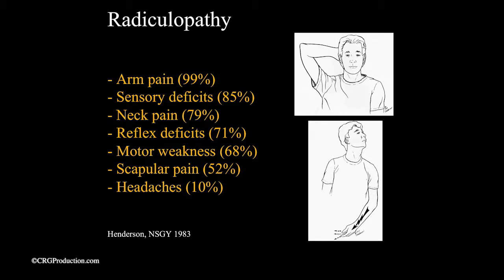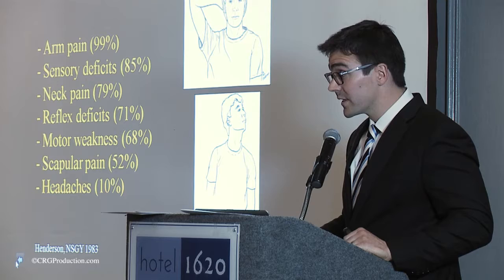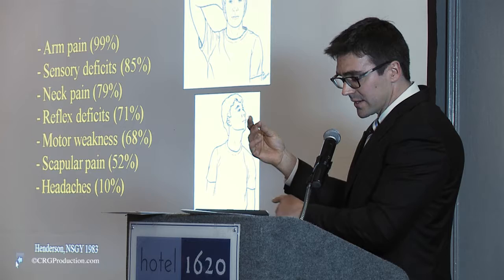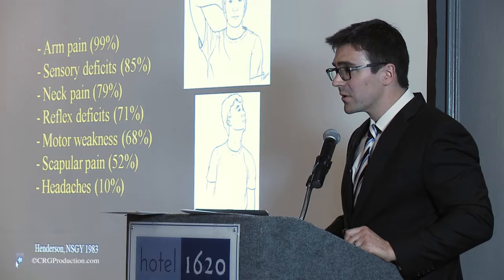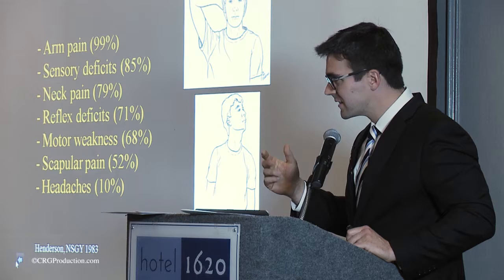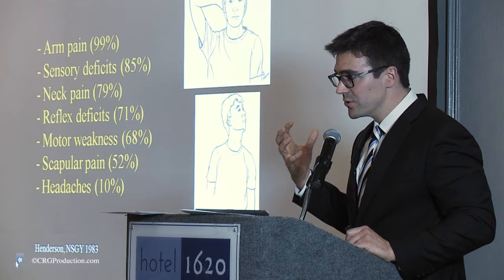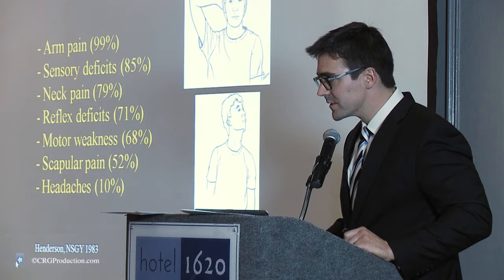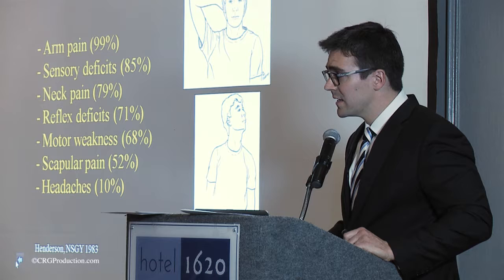The symptoms of radiculopathy: almost everyone has radiating arm pain in the distribution of the affected nerve. Common levels are C6, with pain down the radial side of the forearm into the hand, or C7, down the back of the hand into the middle finger. Some get a sensory deficit — typically a tingling sensation or dysesthesias rather than complete numbness. Most have neck pain. Some have reflex deficits or hyporeflexia, though that can be hard to elicit, particularly in older people who may have hyporeflexia from diabetes. About two-thirds have motor weakness, which is sometimes subtle.